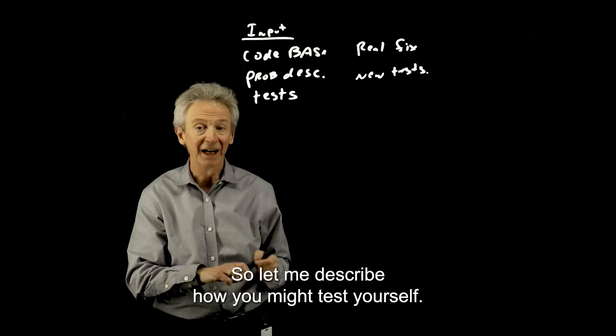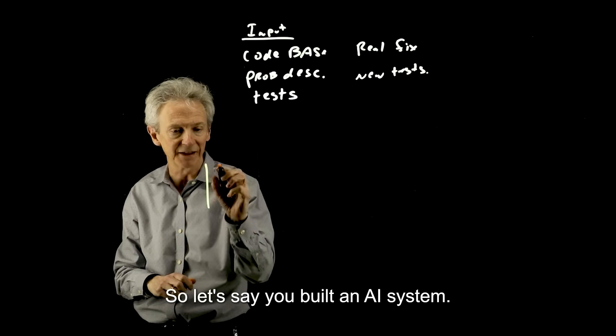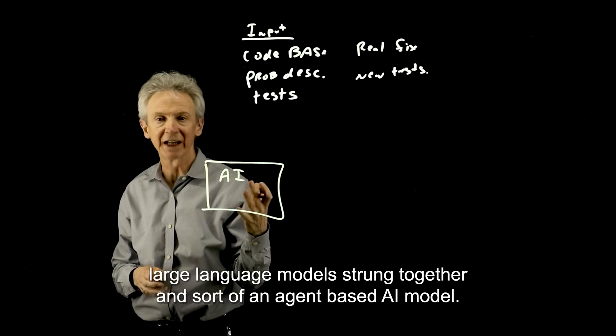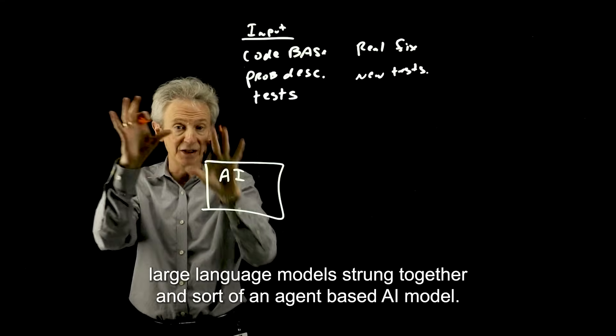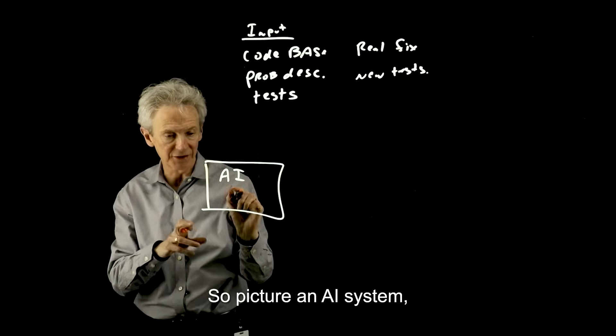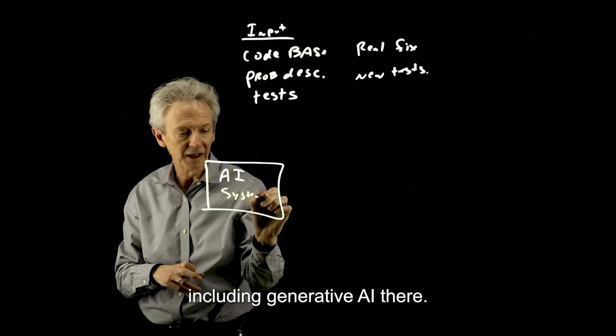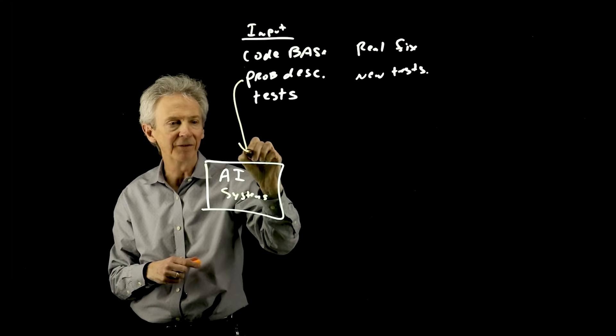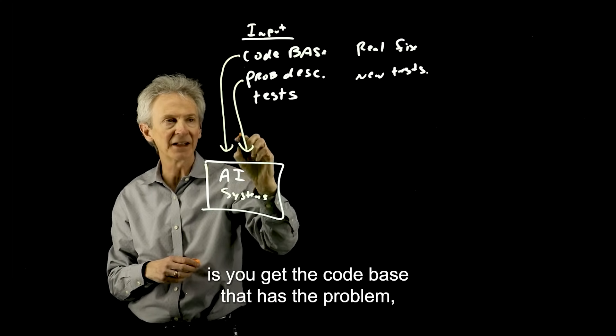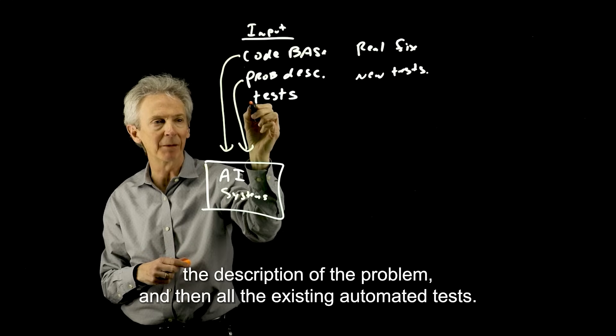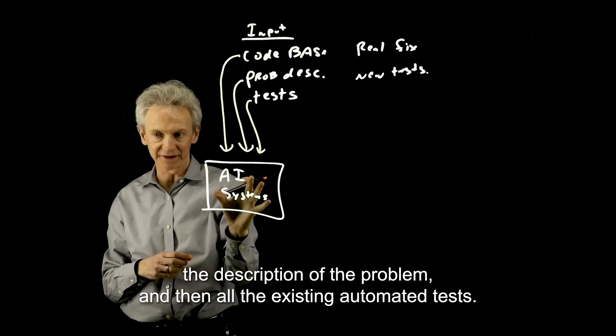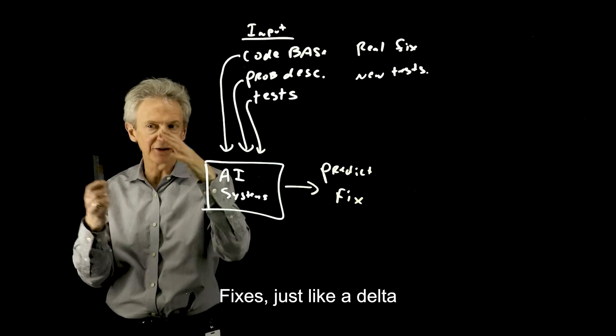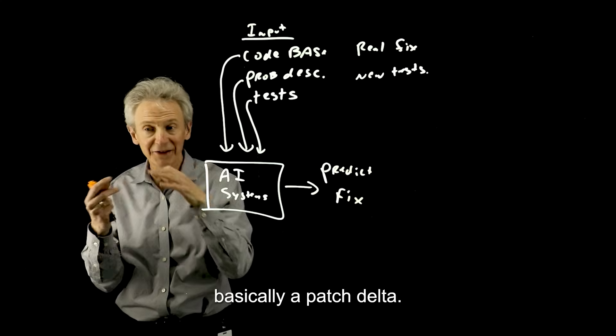So let me describe how you might test yourself. So let's say you built an AI system. I just say AI system because it might be multiple large language models strung together in an agent-based AI model. So picture an AI system, including generative AI there. And basically, the input that you get to your model is you get the code base that has the problem, the description of the problem, and then all the existing automated tests. And then your model has to predict a fix. A fix is just like a delta, basically a patch delta.